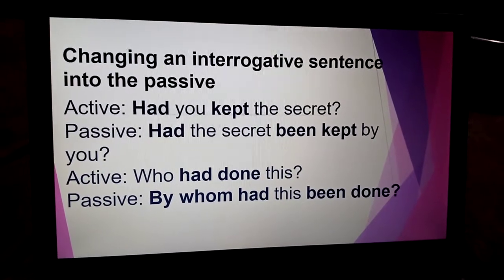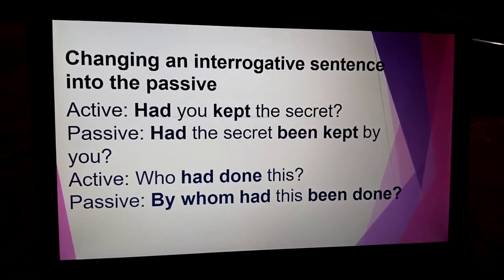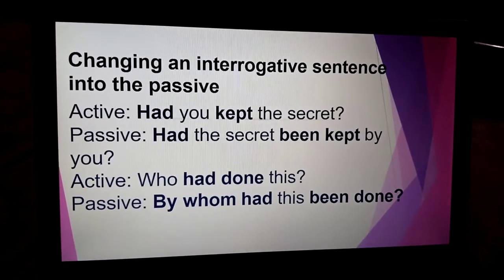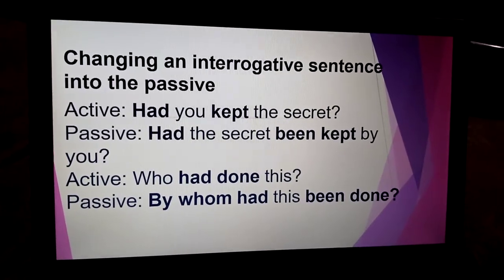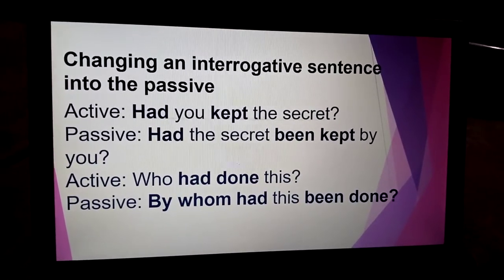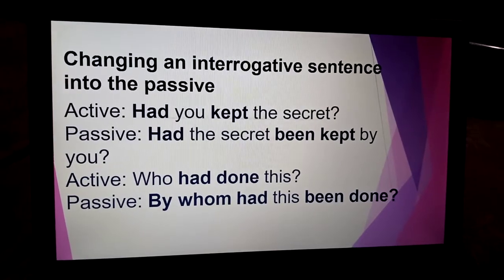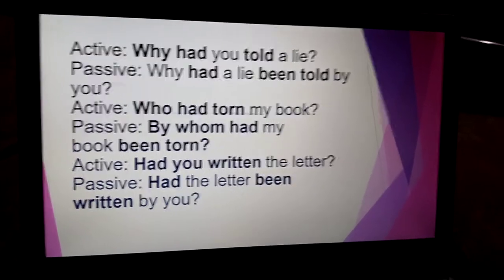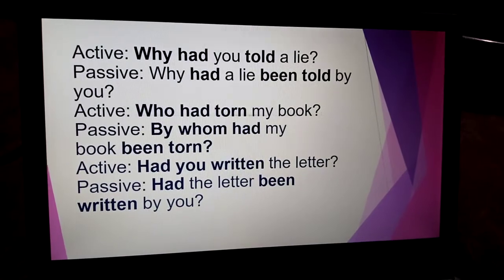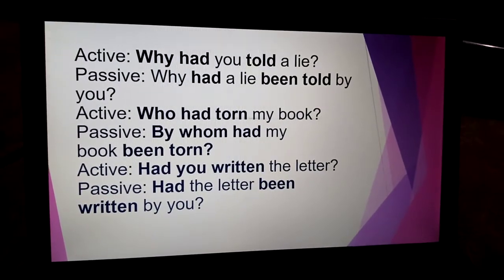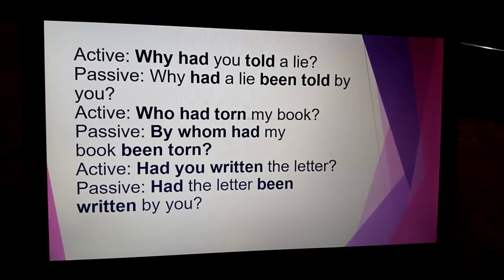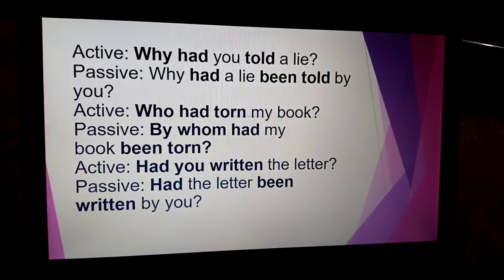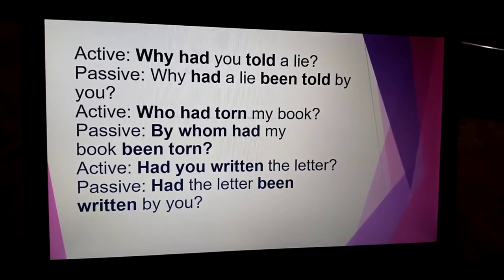Changing an interrogative sentence into passive: 'Had you kept the secret?' — 'Had the secret been kept by you?' with a question mark at the end. 'Who had done this?' — 'By whom had this been done?' 'Why had you told a lie?' — 'Why had a lie been told by you?'